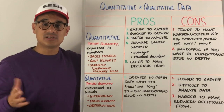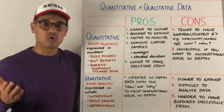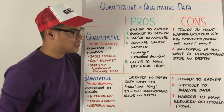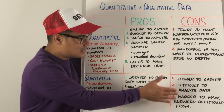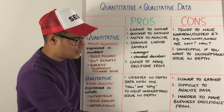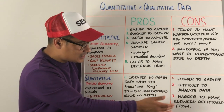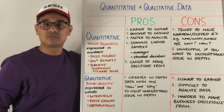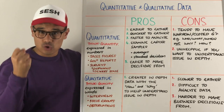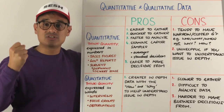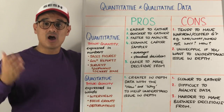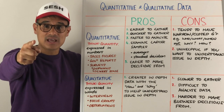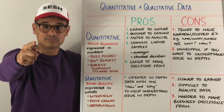The con about qualitative data is that it's slower to gather. It's difficult to analyze and harder to make business decisions from, because there's a lot of it and it's not always clear how to interpret it. I hope that helps and I'll see you at the next session.